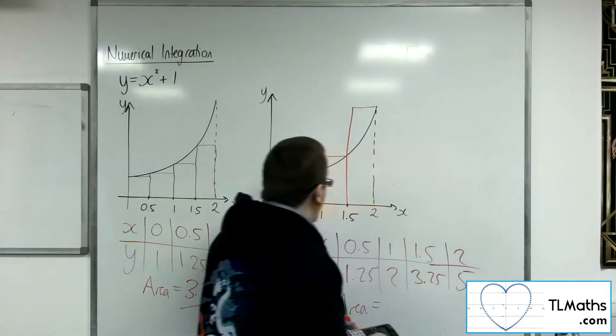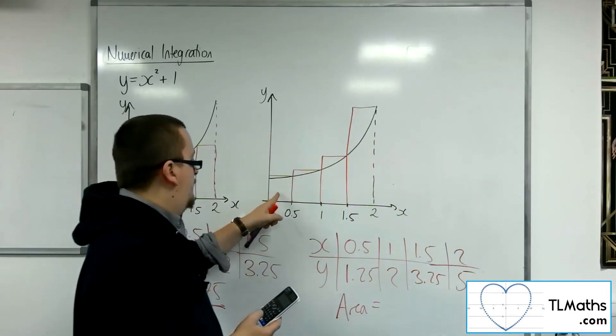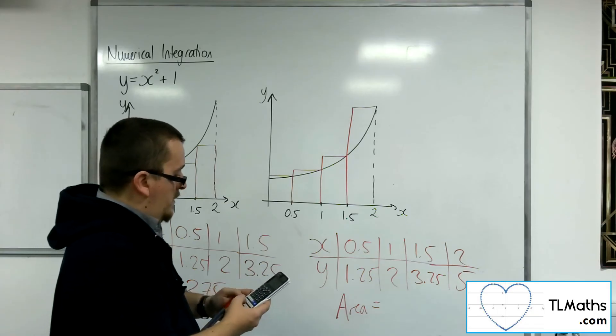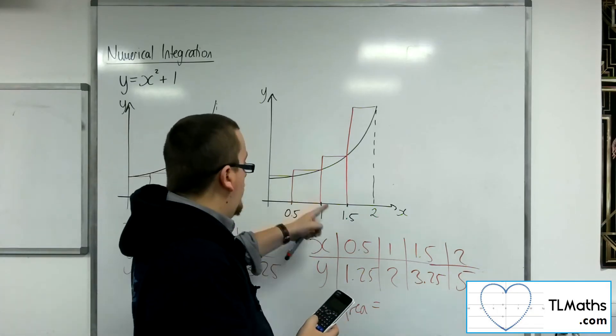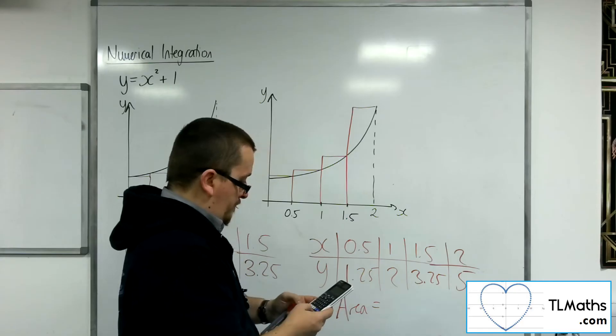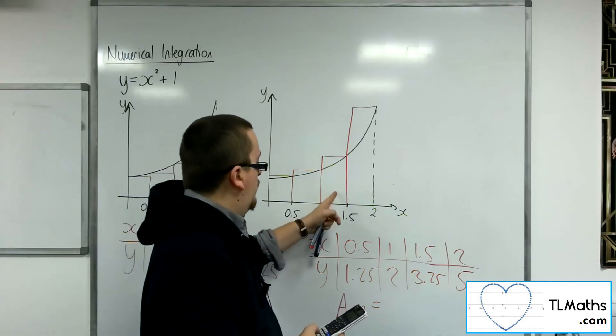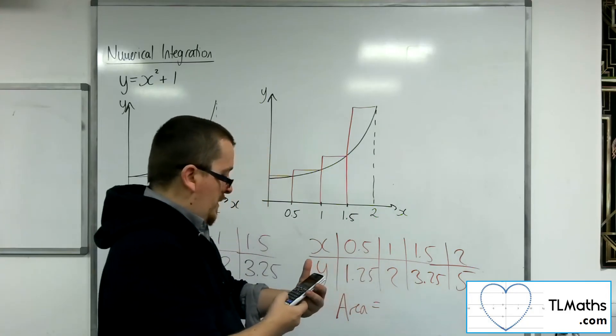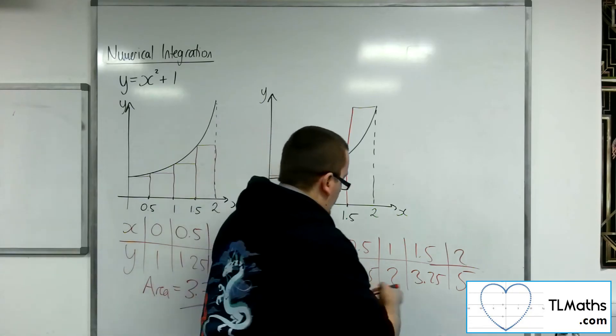So, I can work up this area. We'll have 0.5 times 1.25, plus 0.5 times 2, plus 0.5 times 3.25, and then 0.5 times 5. And so, that's 5.75.